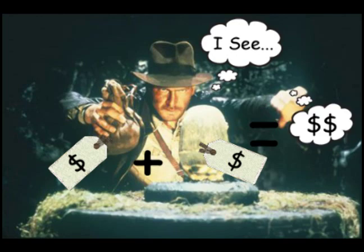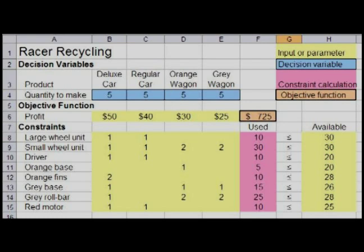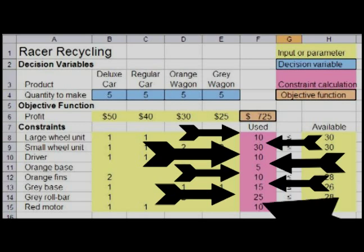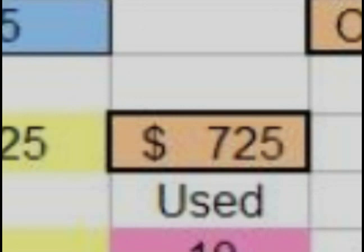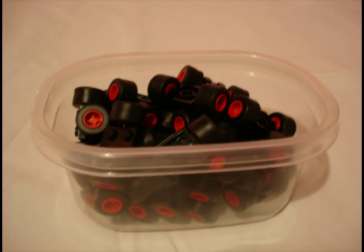For example, let's try producing 5 of each product. The spreadsheet shows that they will use 10 large wheel units, 30 small wheel units, 10 drivers, 5 orange bases, 10 orange fins, 15 grey bases, 25 grey roll bars and 10 red motors, and give a profit of $725. With this solution we are using all the small wheel units but there is a lot of other material left.